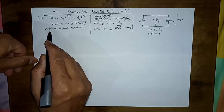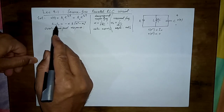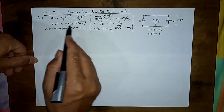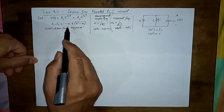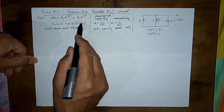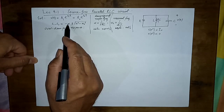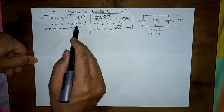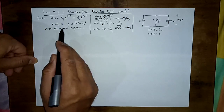We discussed three cases. If alpha is greater than omega_naught, then s1 and s2 are real but distinct values. If alpha is less than omega_naught, this term becomes imaginary and s1 and s2 become complex conjugates — equal real parts, imaginary parts with opposite signs. If alpha equals omega_naught, then s1 and s2 are equal and the response is known as critically damped.